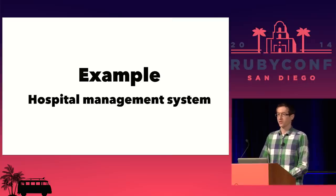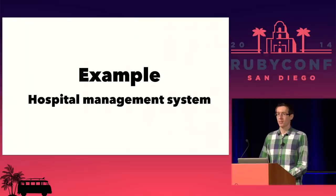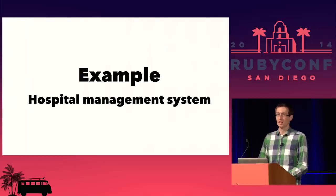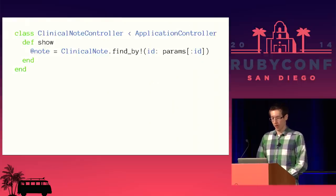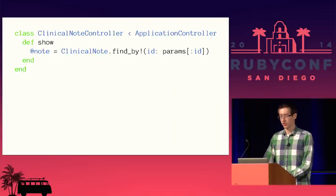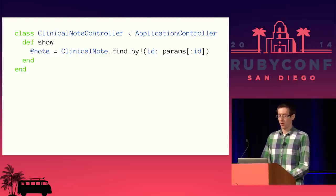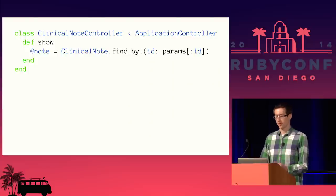Next example: a hospital management system. At one point in my career I worked on software that essentially runs the patient side of a hospital — managing patient records, charts, medical results, all that. One part we worked on was called clinical notes: a doctor can add notes to a patient's chart, and later when talking to the patient they can see all those notes. The app wasn't written in Ruby or Rails, but let's say it was. The clinical notes controller might have a simple show action — based on the ID, look up the note and display it in the view.